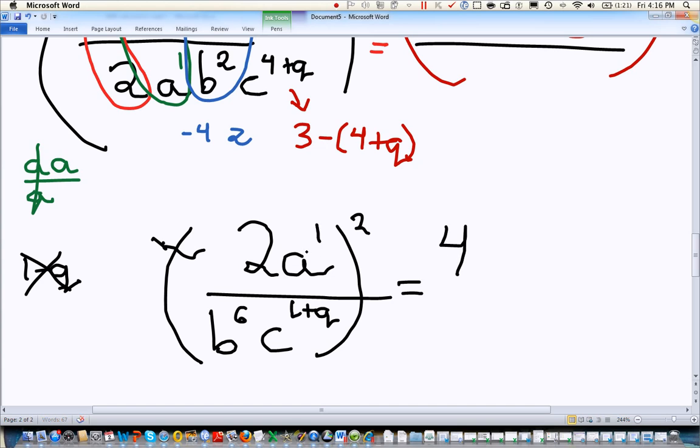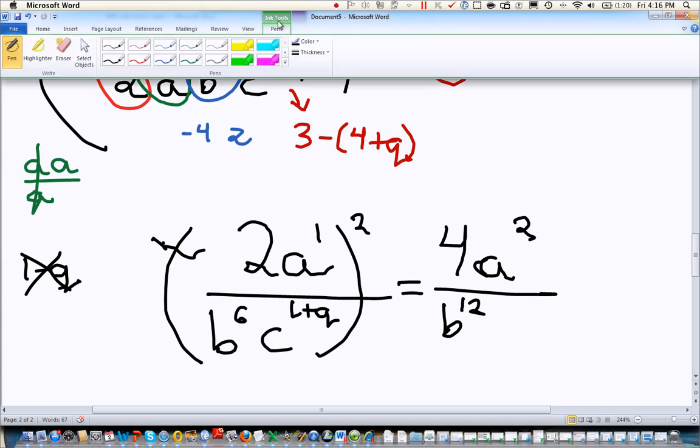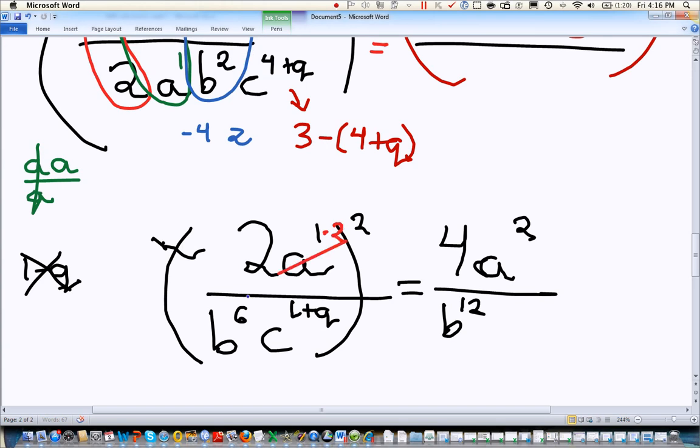And then we're going to multiply exponents. So for the A, we have a 1 times a 2 or a 2. On the bottom, we have a 6 times a 2 for a 12. And we can write next to all of these what I'm doing. We're going to multiply each of these exponents by 2. And then we're going to take this whole exponent and multiply it by 2. And you do want to be careful to do the whole thing by 2.